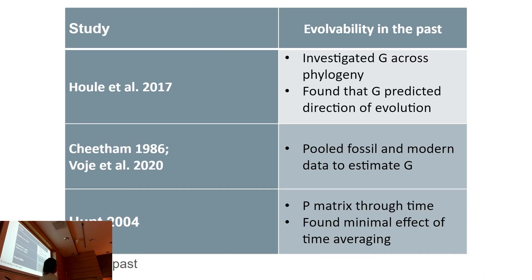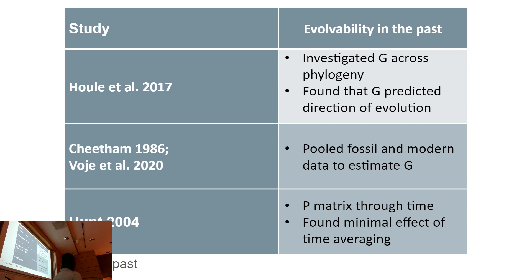Some previous studies show the history of how we came to decide this project should be done. People have looked at whether G can predict where evolution goes through time, and found that it can, without knowing the selection pressure. People have also asked: if I include fossil data, can I estimate G? And they can, which is very exciting. Then people asked: if I only know P, how much does time averaging affect estimating P?